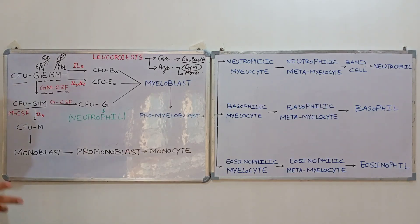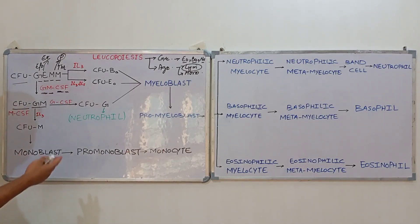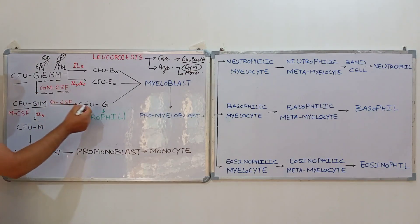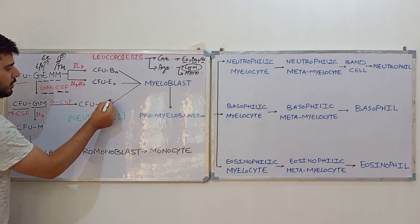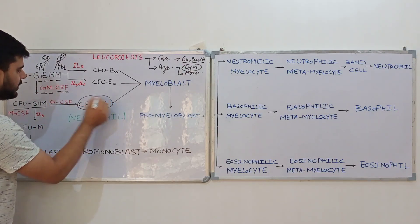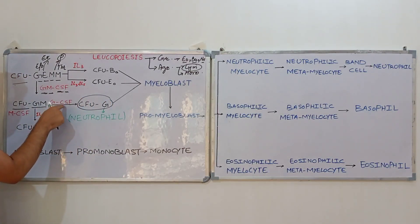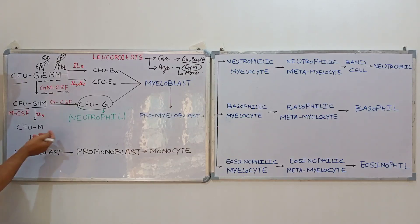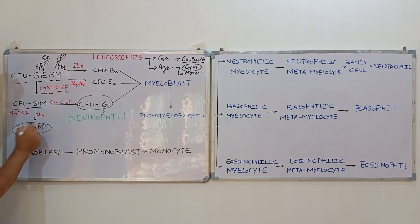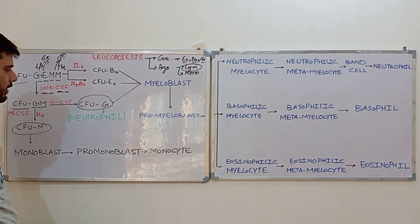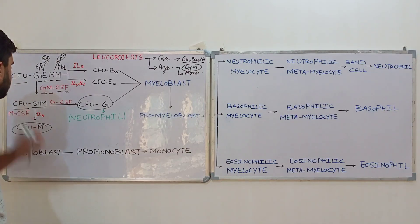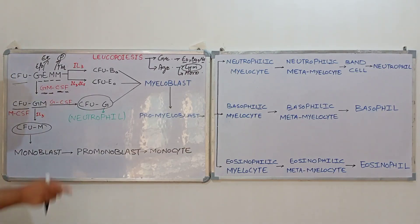From CFU-GM, two further pathways are possible. If granulocyte colony stimulating factor (G-CSF) is present, it forms the colony forming unit granulocyte (CFU-G). If monocyte colony stimulating factor (M-CSF) is present, it forms the colony forming unit monocyte (CFU-M).